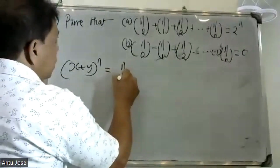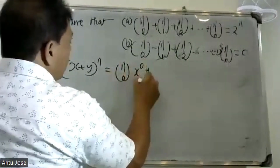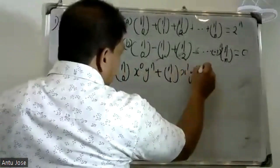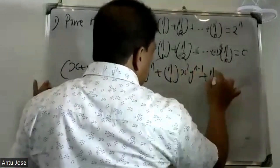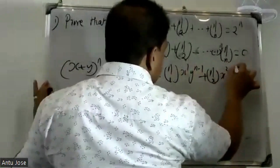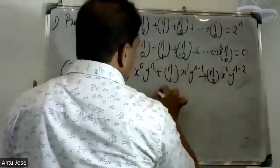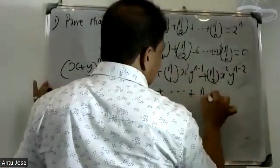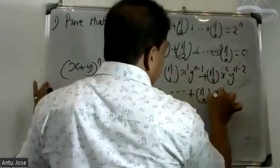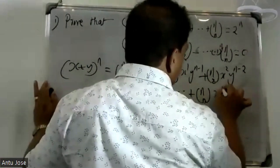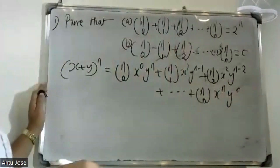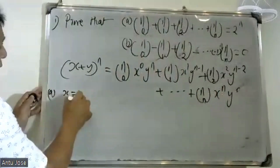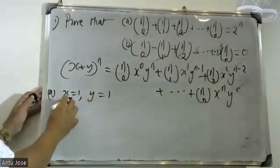From the binomial expansion: x plus y raised to n equals nC0 x raised to 0 y raised to n, plus nC1 x raised to 1 y raised to n minus 1, plus nC2 x squared y raised to n minus 2, and so on up to nCn x raised to n y raised to 0.